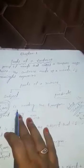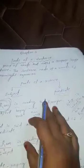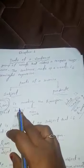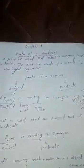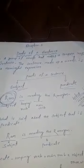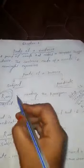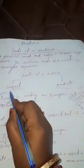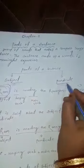There are so many parts in a sentence like subject, predicate, object, a verb, an adjective, an adverb, etc. But the most important parts of a sentence are the subject and the predicate.